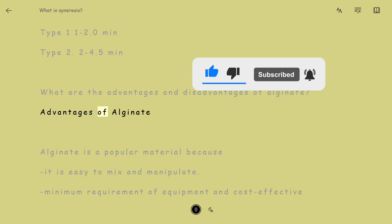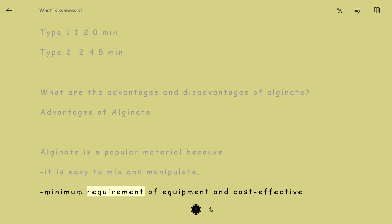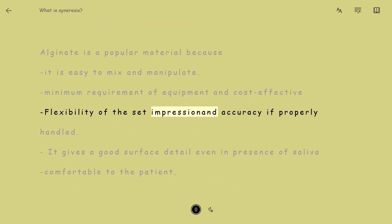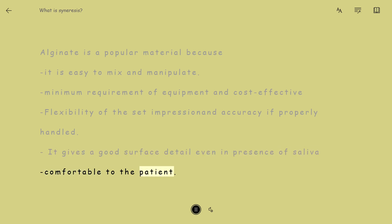Advantages of Alginate: Alginate is a popular material because it is easy to mix and manipulate. It has minimal equipment requirements and is cost-effective. The set impression is flexible and accurate if properly handled. It gives good surface detail even in the presence of saliva. It is comfortable to the patient.